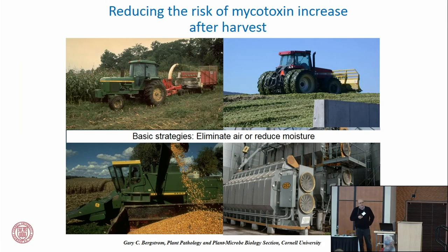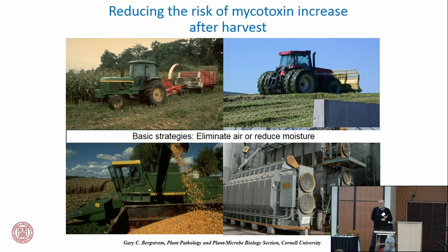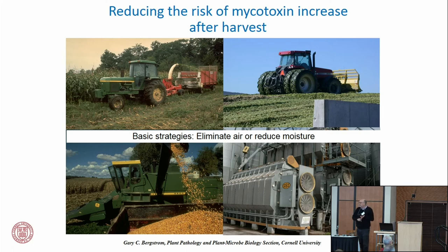These molds only develop when there's a certain level of moisture in the kernels. So if we can dry grain down — 12%, 13% — whatever toxin came in the door after harvest is still there, but it won't develop more in storage. They're also strictly aerobic organisms, so if we get proper silage conditions — freedom from air, from oxygen — you will stop further growth of the fungus and production of toxins.